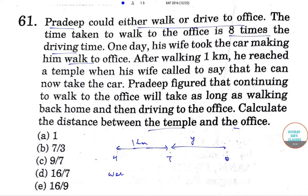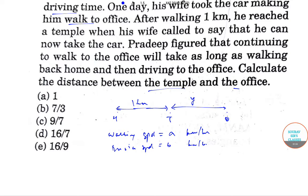Now let walking speed is equal to a km per hour and driving speed be b km per hour. Then, according to the question, 1 by a plus y plus 1 by b is equal to y by a.